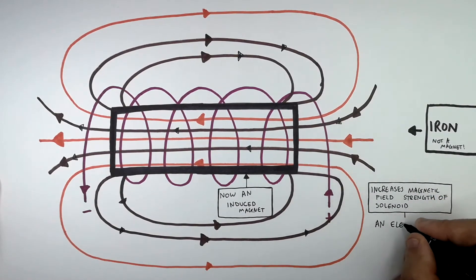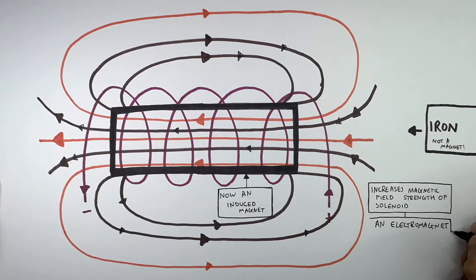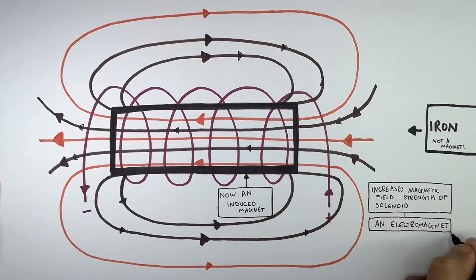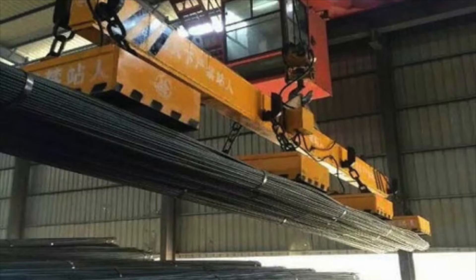And the solenoid now acts as an electromagnet. Electromagnets are incredibly strong magnets as you can see in the diagrams here. They have very strong magnetic field strengths.